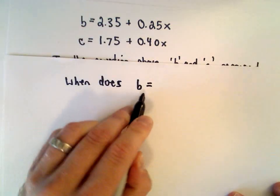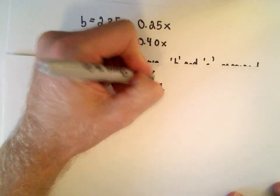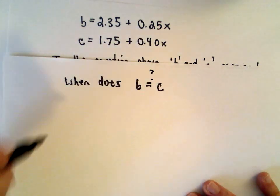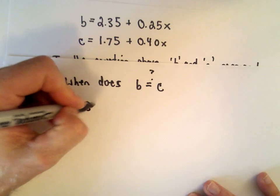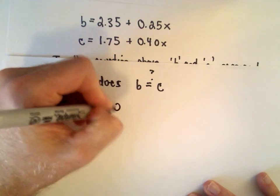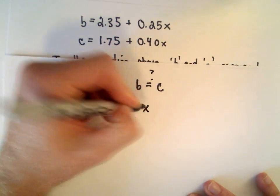When does the price of beef equal the price of chicken - that's the question. So to do that, we'll just set these two equations equal to each other: 2.35 plus 0.25x equals 1.75 plus 0.40x.